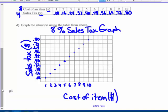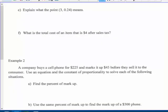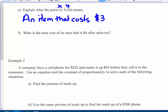I could connect those with a line, but I'm not going to, though you can. Because an item can cost in between 1 and 2 dollars, and then the tax would be somewhere in between 8 cents and 16 cents. Explain what the point (3, 0.24) means: An item that costs $3 has 24 cents tax.